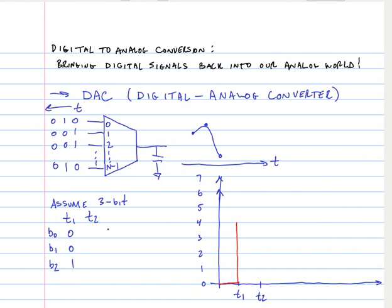It would stay at 4 until time T2, when a new sample came in, 1, 0, 1, say. 1, 0, 1 represents 5, so the signal would jump up to 5.